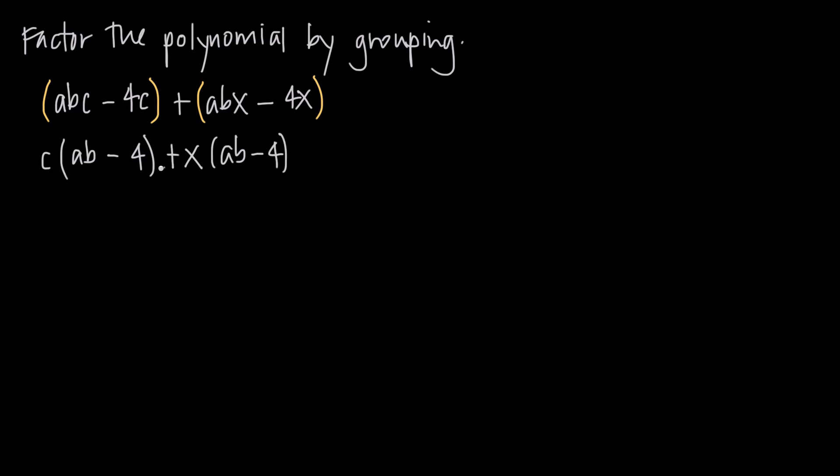At this point, we factored the polynomial, but we still have a common factor of AB minus 4 that we see in both terms. So what we need to do is factor that AB minus 4 out of the polynomial. This is what we're going to factor out. And what's left when we take AB minus 4 out of each term?